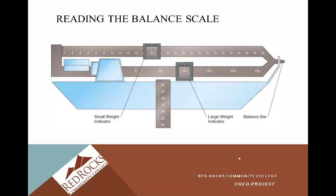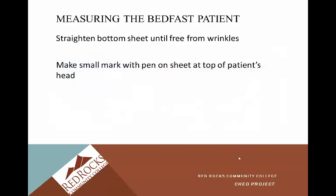Then move the small weight indicator to the right until the balance bar drops all the way down, then nudge it back to the left until the bar is completely balanced — that will be the person's weight. This will make more sense when we practice it in skills lab. For your state testing, you have to be within two pounds of the proctor's reading, so we'll really practice what that looks like when weighing someone in person.